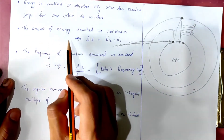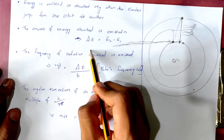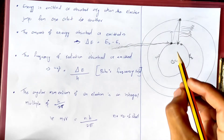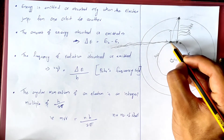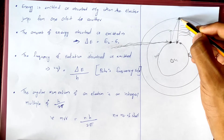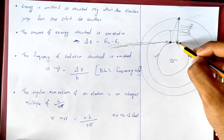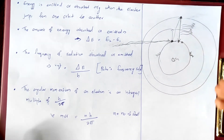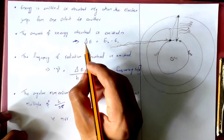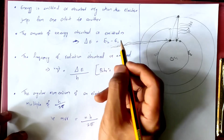The amount of energy absorbed or emitted is equal to delta E, which equals E2 minus E1. This electron absorbs energy. Calculate the equation: delta E equals E2 minus E1.